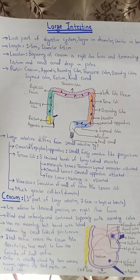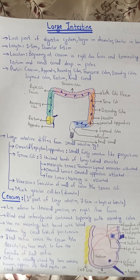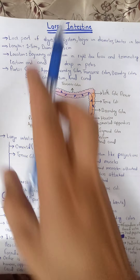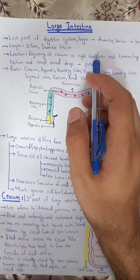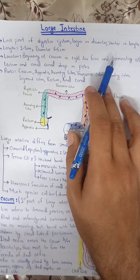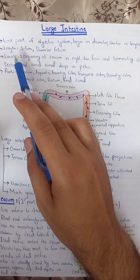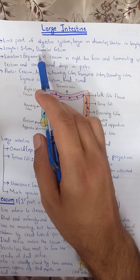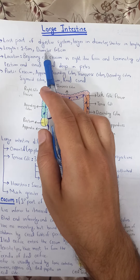Assalamualaikum, today we are going to start the large intestine. We are seeing the lectures of the abdominal viscera. The large intestine is a very large viscera which surrounds the small intestine. It is the largest part of the digestive system — larger in diameter but shorter in length. It is about 1.5 meters in length and the diameter is 6.5 cm.